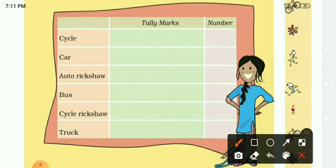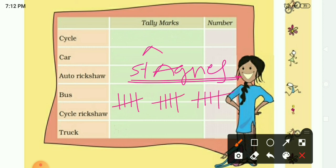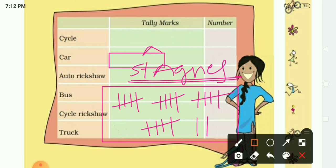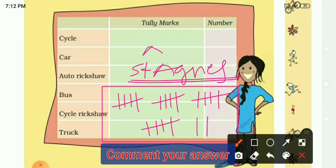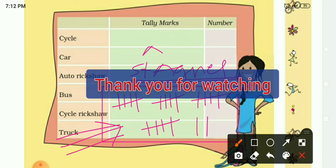Now one last question for you. Take a school — say, St. Agnes School — where some teachers are there. I am using tally marks to show their numbers. You can see the tally marks on screen. Count these tally marks and write the number of teachers in this school. Put your answer in the comment section. That's all for today's class — see you in the next video. Till then, be safe, be healthy. Jai Hind!